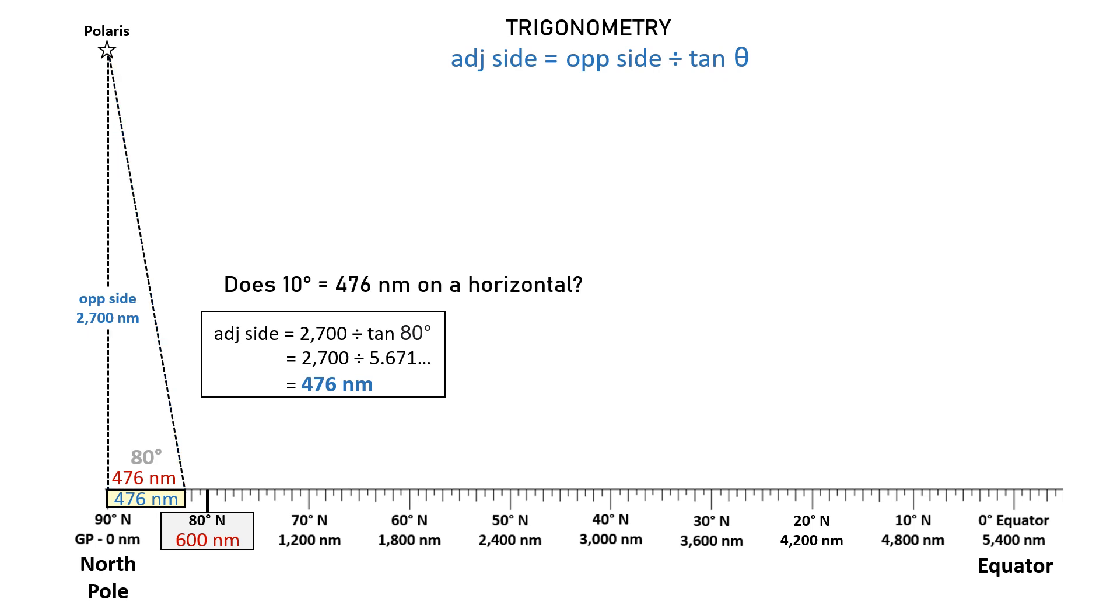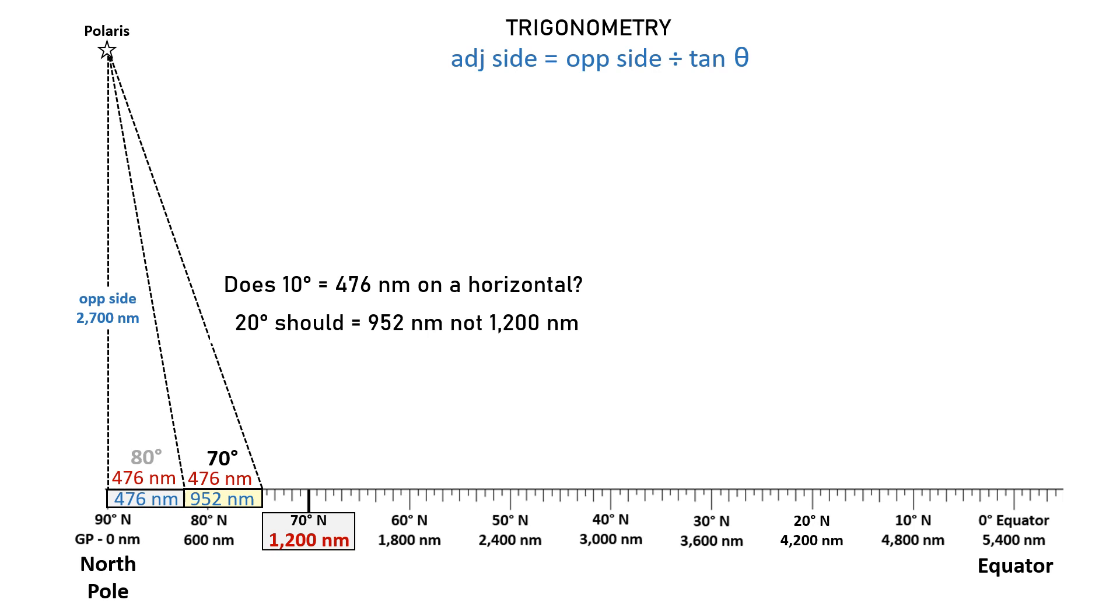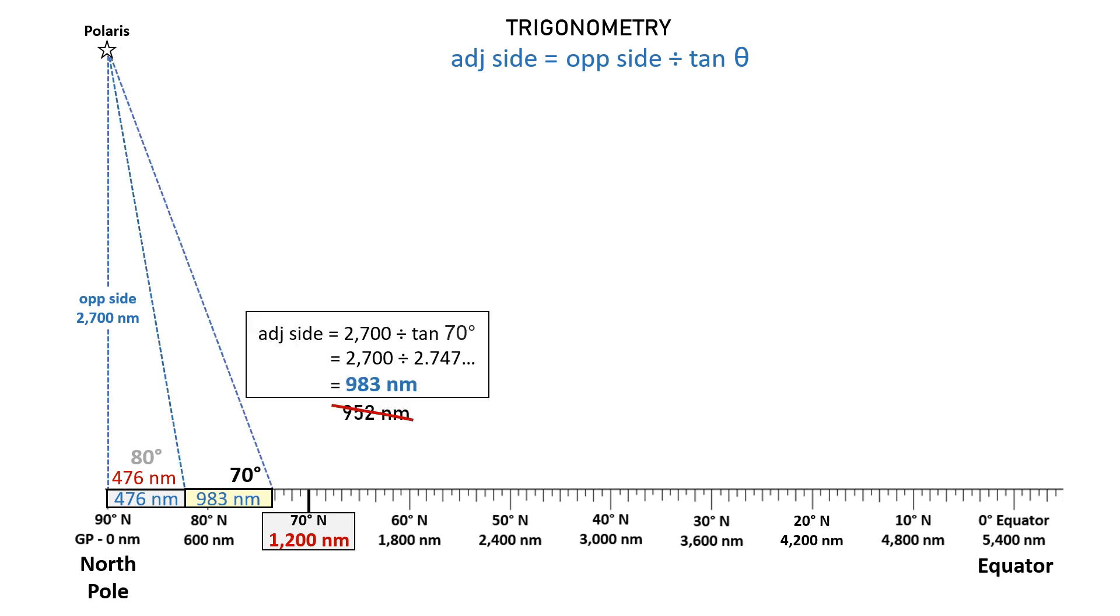Well maybe every 10-degree change is actually 476 nautical miles on a horizontal. And if this is the case, 20 degrees should equal 952 nautical miles, not 1200 nautical miles. Well, that's definitely not the case. And by subtracting 476 from 983, we can see that this 10-degree change actually was a bit longer at 507 nautical miles.